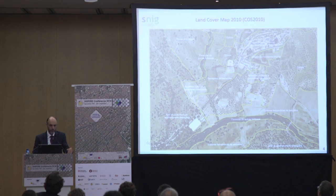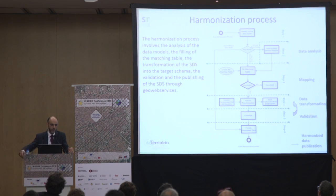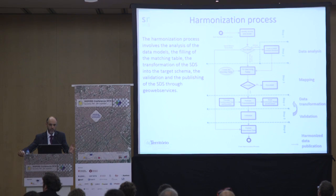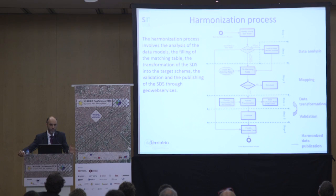The map has several polygons, each with a land cover classification. We defined the harmonization process in several steps: first, analysis of the source schema and data model; then filling the matching tables establishing the correspondence between the source and target schema; then the transformation using the software HALE; and finally, validation of the data and publishing using web services.